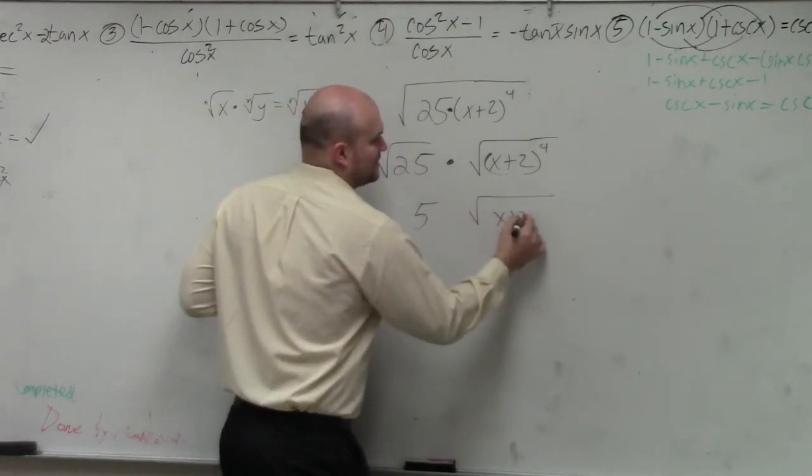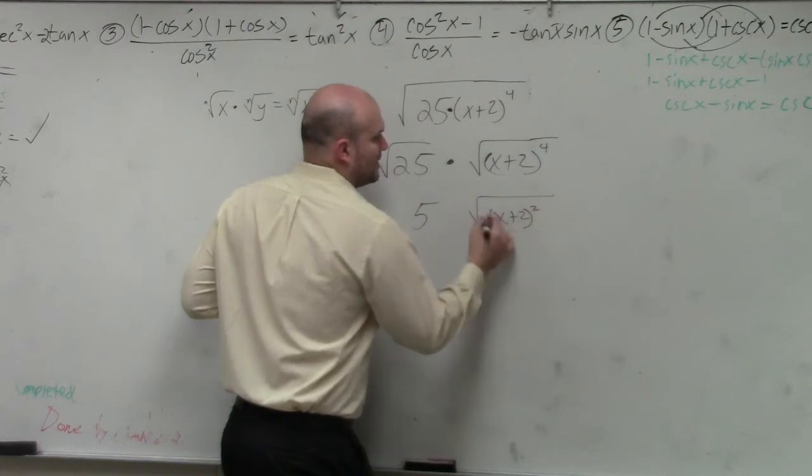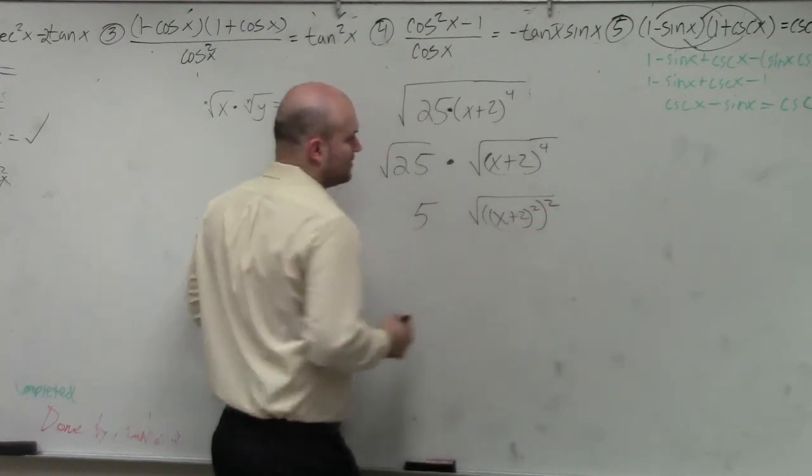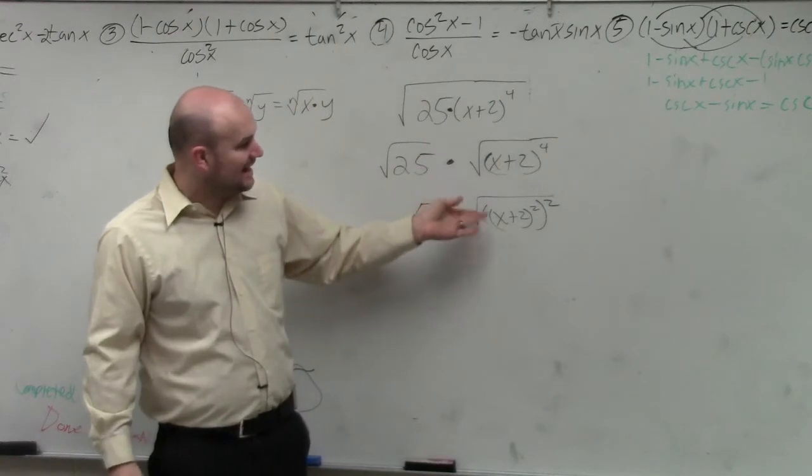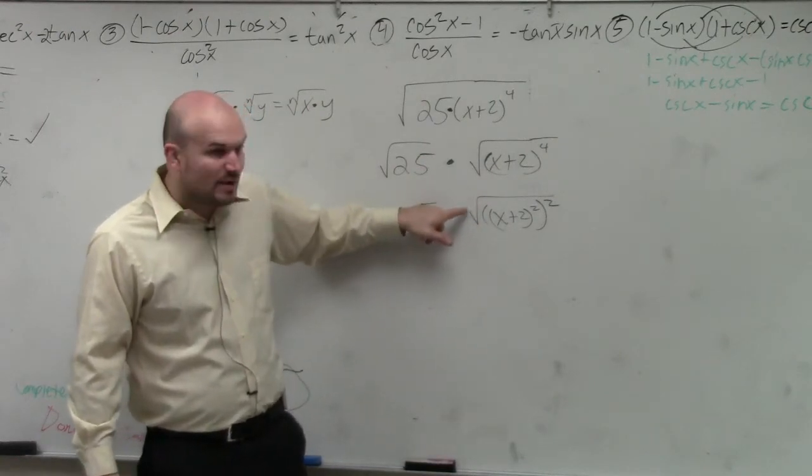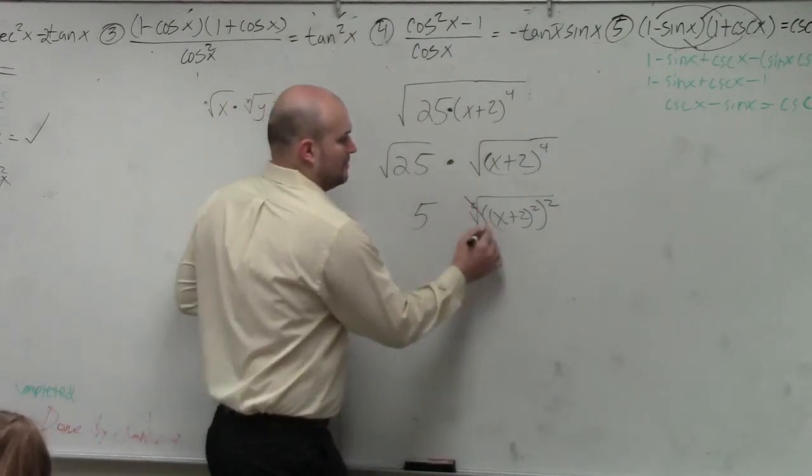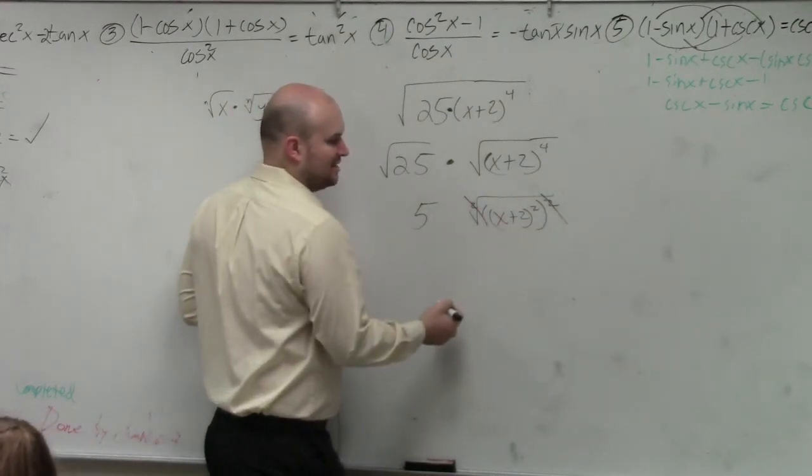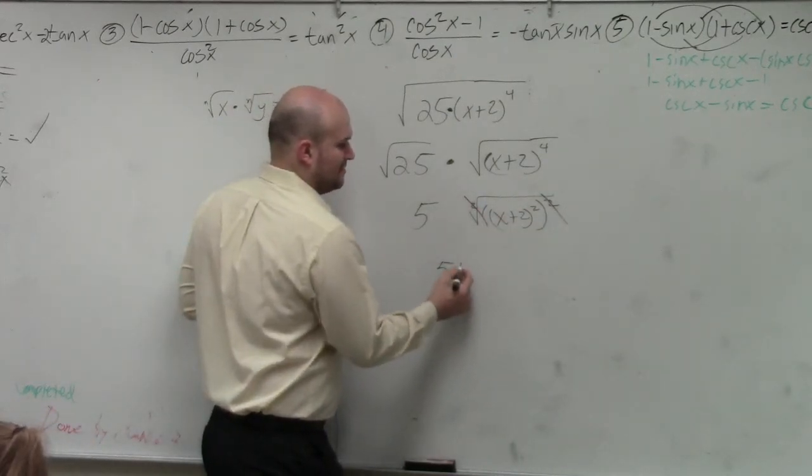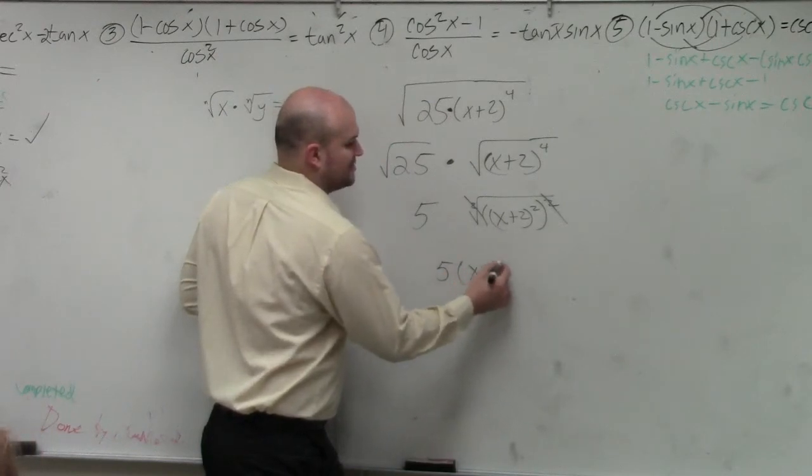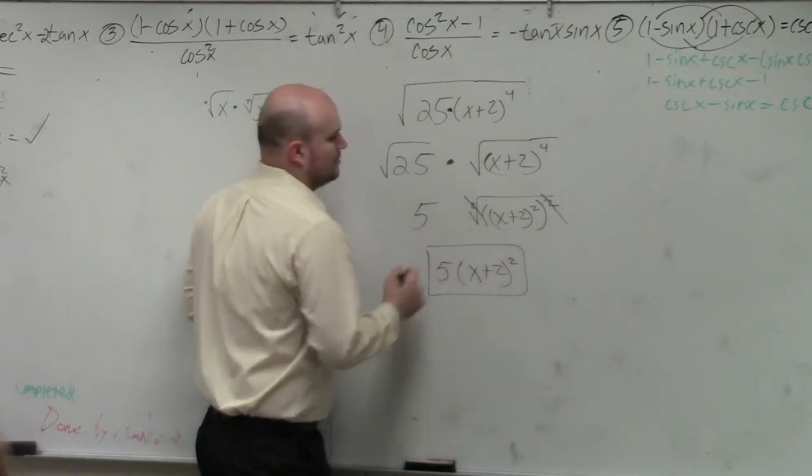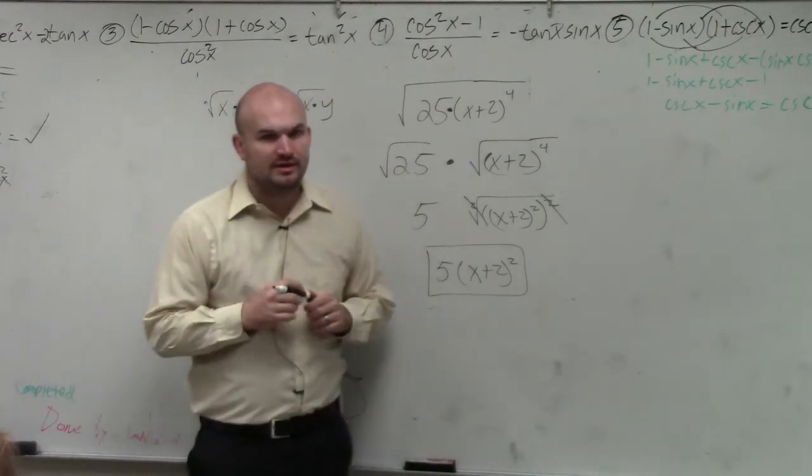Square root of x plus 2 squared squared. Because again, when we're trying to, the identity element is telling us, what is the square root of this squared, right? So that's just going to leave us with x plus 2 squared. And that's your final answer.